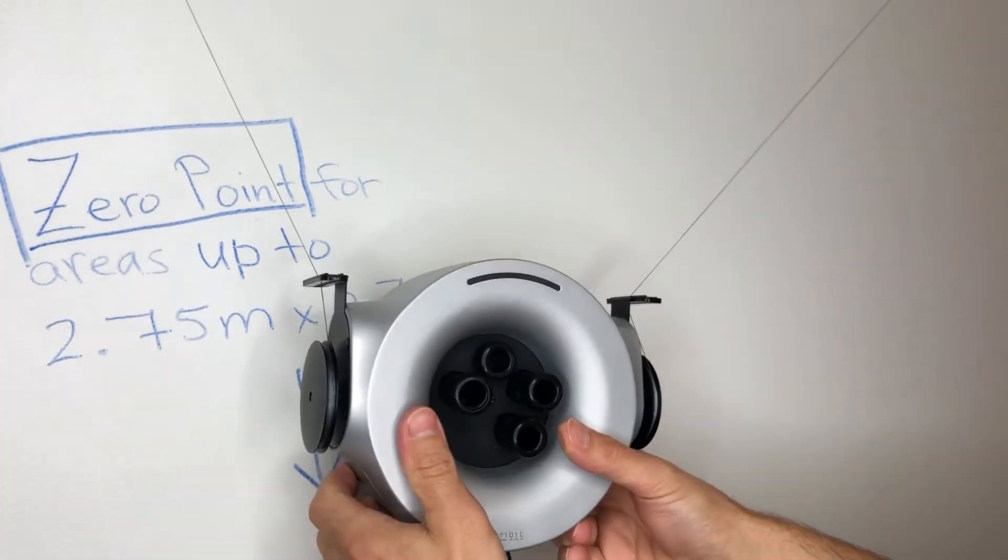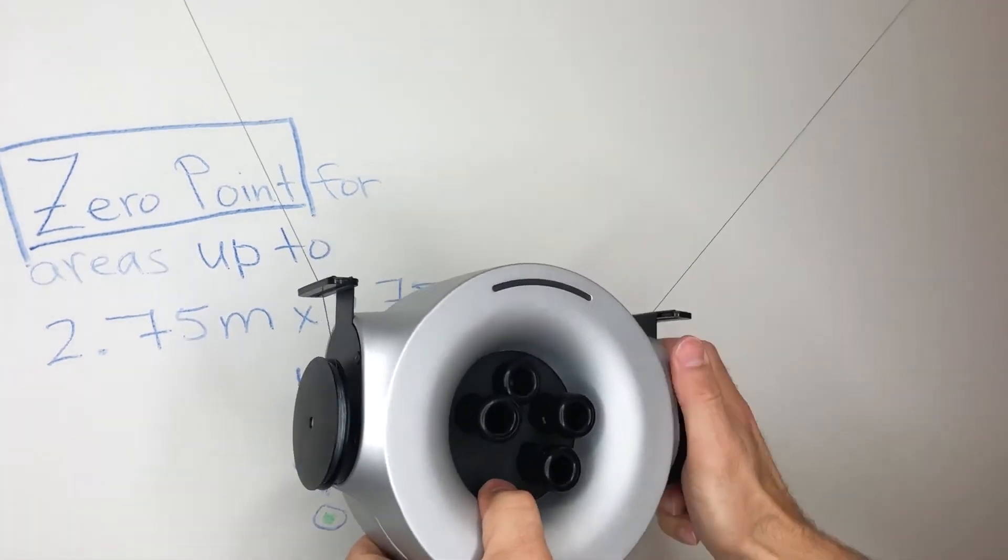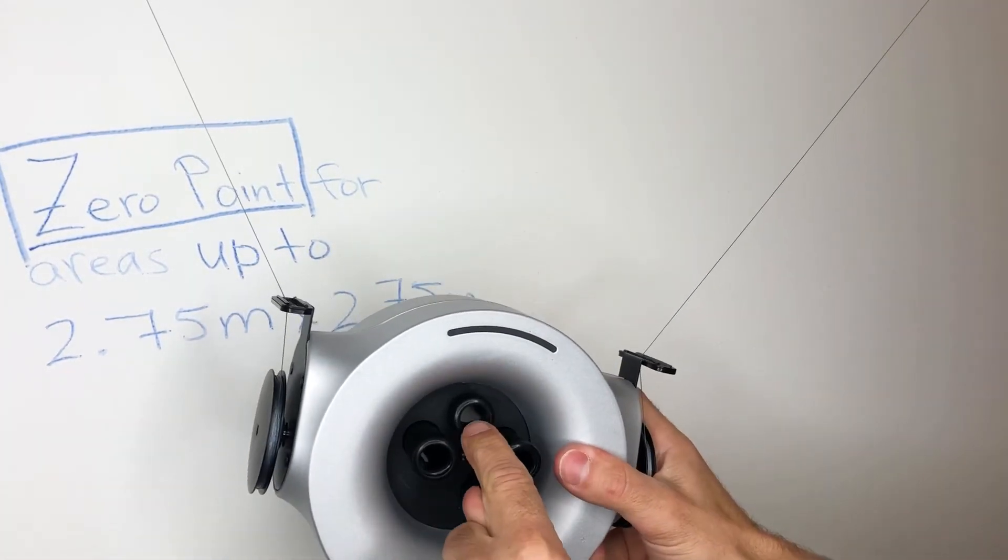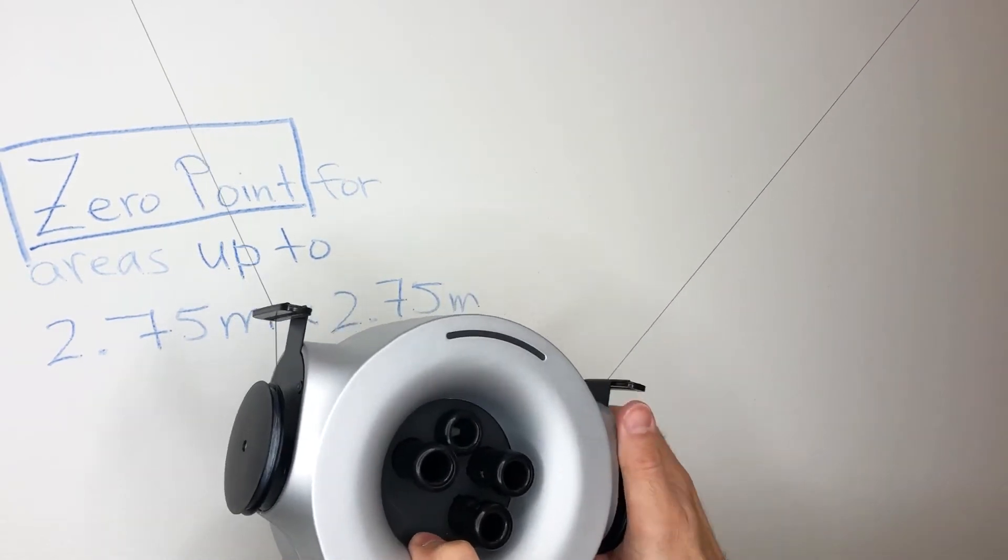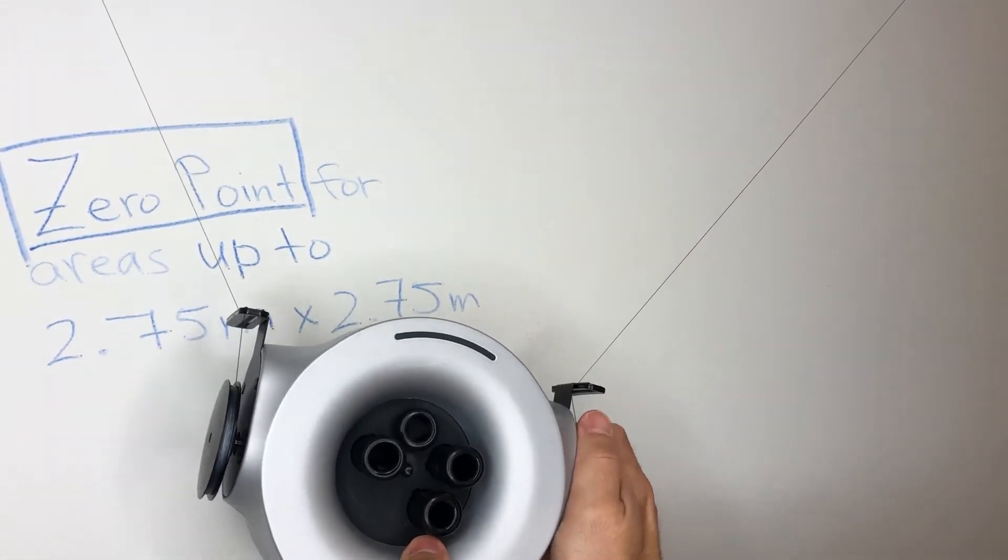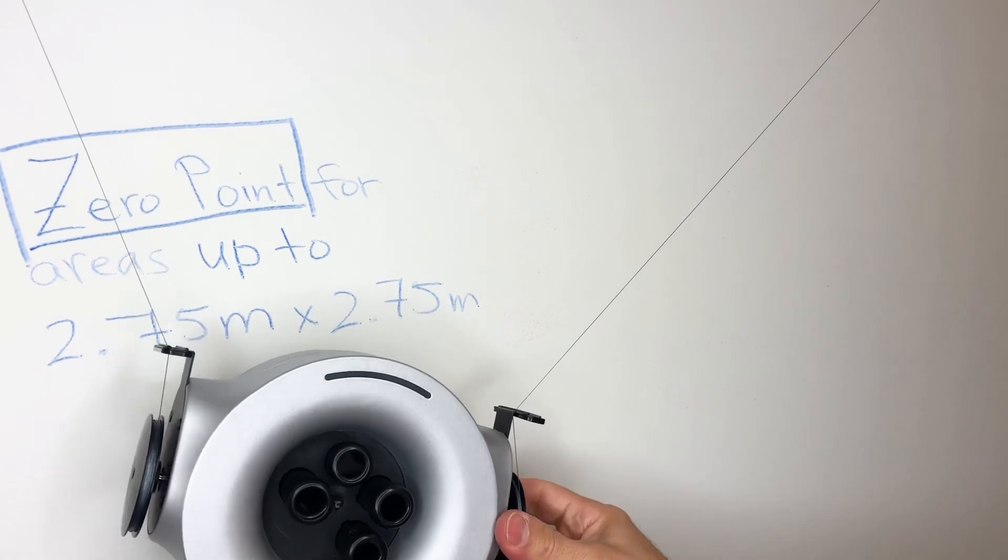So you want to keep doing this until you can see your zero point through this hole, that's the active marker hole. Okay, so we're going to keep doing that and we're going to keep going until we're pretty close.